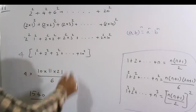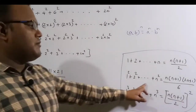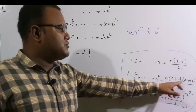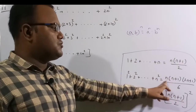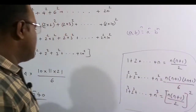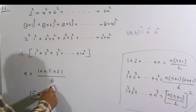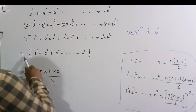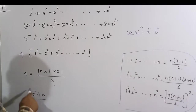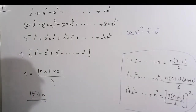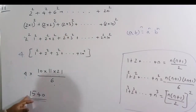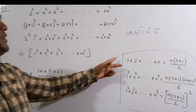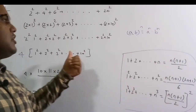Using the formula for 1² + 2² + ... + n² with n = 10: 4 × [10 × 11 × 21 / 6] = 4 × 385 = 1540. Therefore 2² + 4² + 6² + ... + 20² = 1540. We used the second formula among the three important summation formulas.